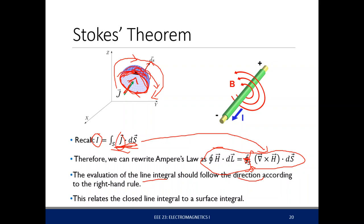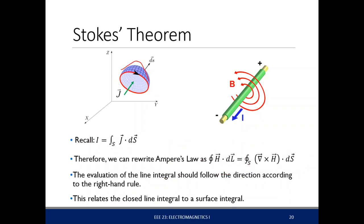You define an area whose vector is parallel to the current. Using your right thumb pointing in that direction and curling your hand, the direction your right hand curls gives the direction of the closed loop path you will follow. This theorem relates a closed line integral to a surface integral — recall that for our divergence theorem, we relate a closed surface integral to a volume integral.